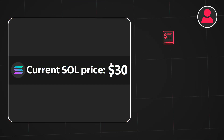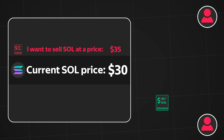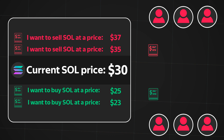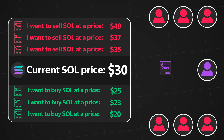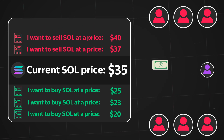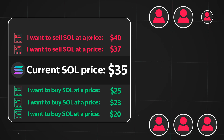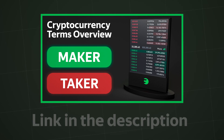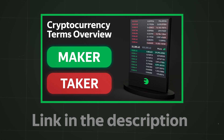On centralized exchanges, liquidity — that is the ability to quickly sell cryptocurrency at a market price — is provided by makers: people who create pending orders sent to the order book and waiting for execution if the asset reaches a certain price. Such orders are executed by takers, people who want to instantly sell or buy an asset. Thus on exchanges with high liquidity you can always quickly sell a cryptocurrency at a price close to market price. For more information about makers and takers, as well as the liquidity system on exchanges, you can watch our video linked in the description.